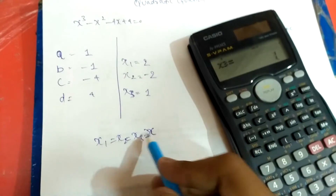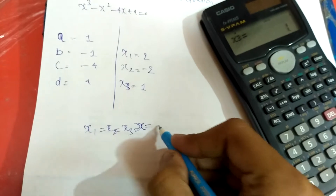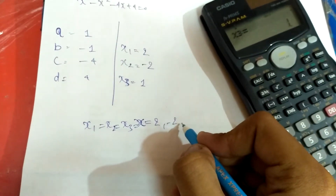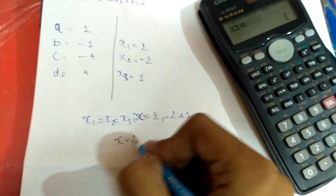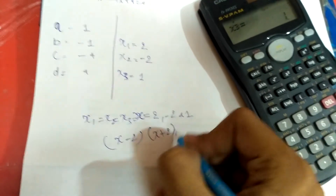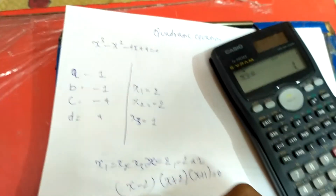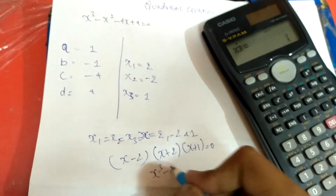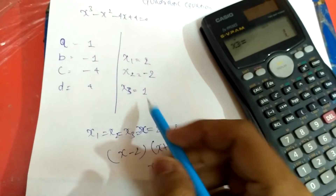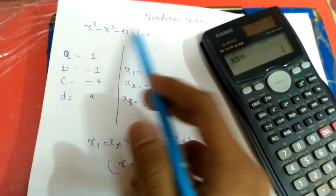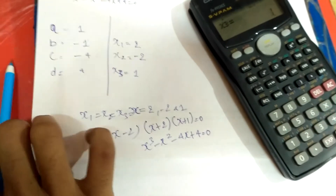x1, x2, and x3 are all values of x. Here we are finding the value of x, so these three are the roots and the values of x we got are 2, minus 2, and 1. You can also write it as (x minus 2)(x plus 2)(x minus 1) equal to 0, and if you expand this you will get back the equation x cubed minus x squared minus 4x plus 4 equal to 0.